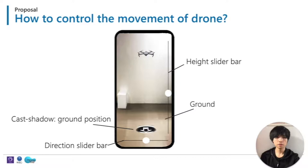We chose to use a mobile device to implement these concepts. A height slide bar is used to adjust height, the caster shadow is used to determine the ground position, and a direction slide bar is used to rotate the drone. With such an interface, we can pinpoint the drone's position. So we call this interface Pinpoint Fly.